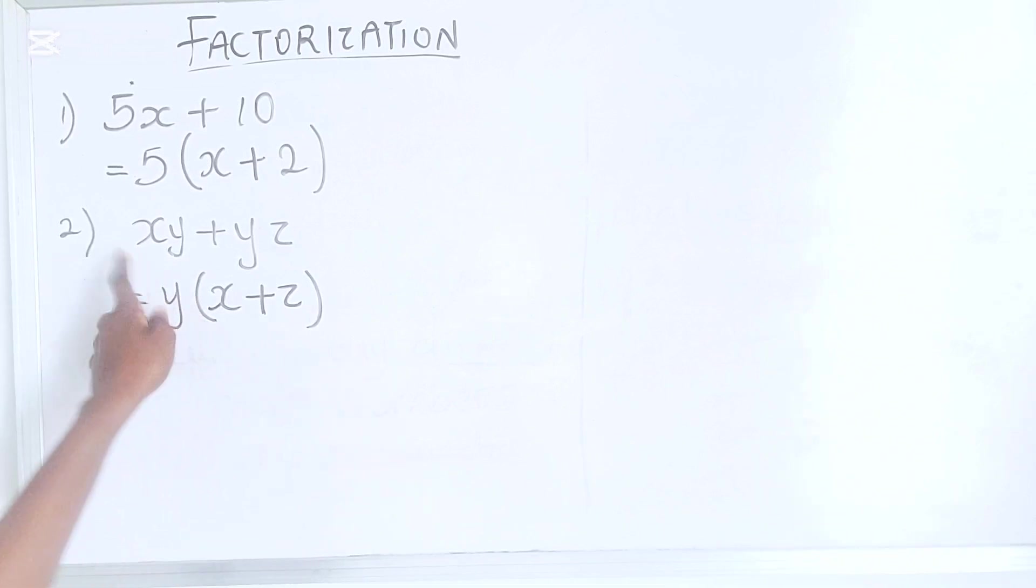If you expand this, you would get this. Y times X is XY. Y times Z is YZ. Simple and straightforward, right?